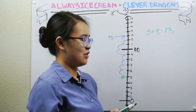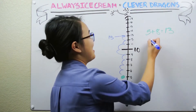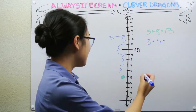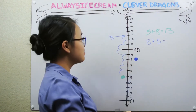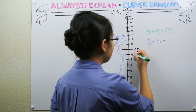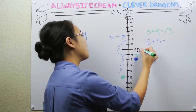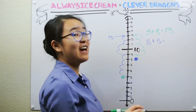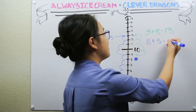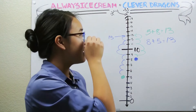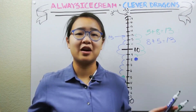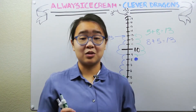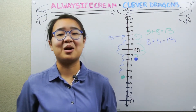Now let's shake it up a little bit and try something different. What if we did eight plus five? Let's start at eight and move up five steps: one, two takes us to ten, three, four, five — and we end at thirteen again. Eight plus five is also equal to thirteen. You can try this with whatever pairs of numbers you want, but you'll see it always comes out the same way. With regards to addition, order does not matter.